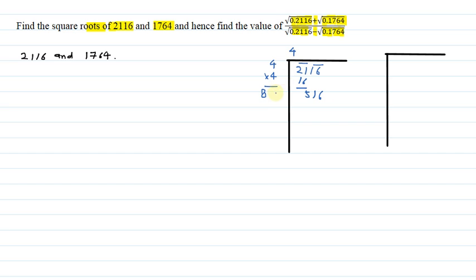In the long division method, we place a number, divide, multiply, and put the same number. Here we look at what number works — if we try 6, and multiply 86 by 6, we place it in the next step. The result here is 516, and after subtraction the remainder is 0. So this square root is 46.